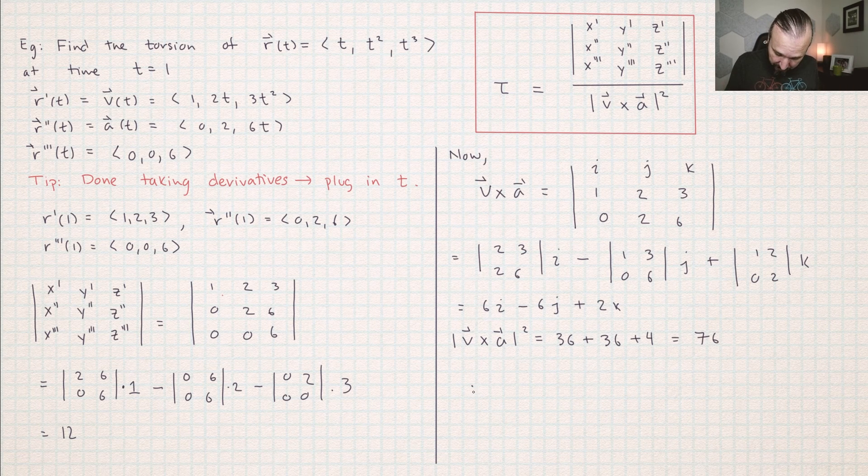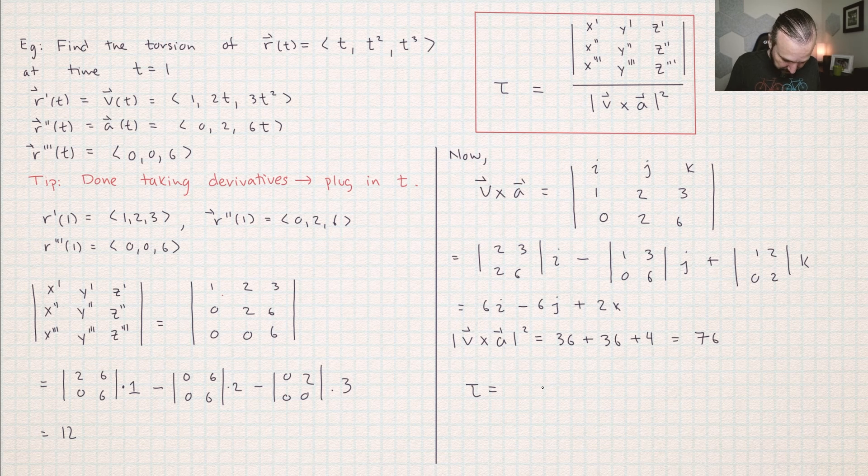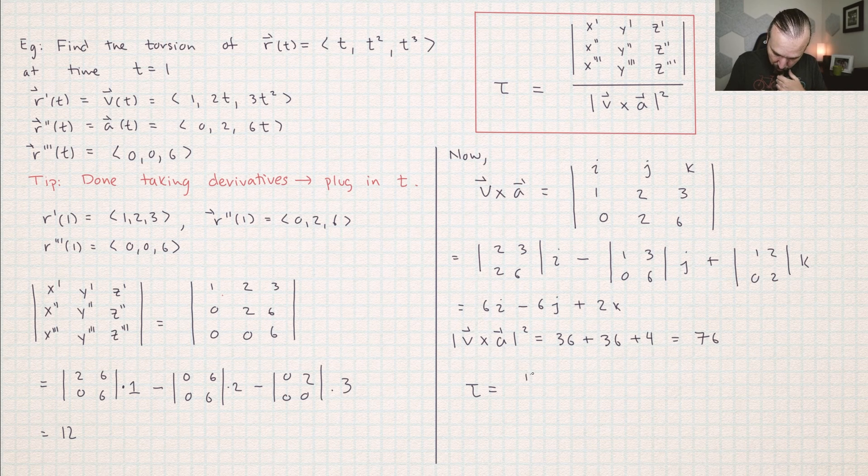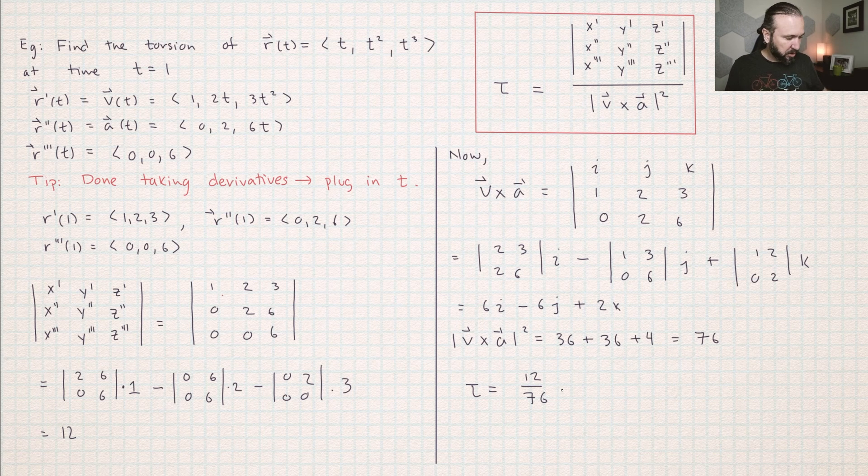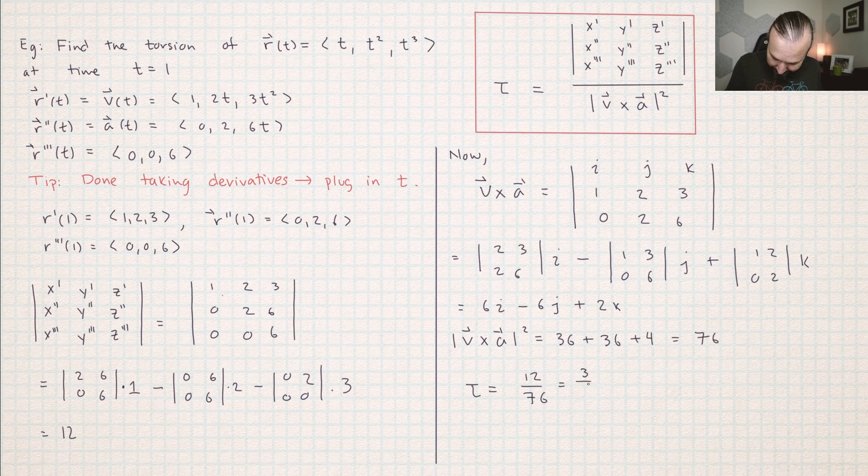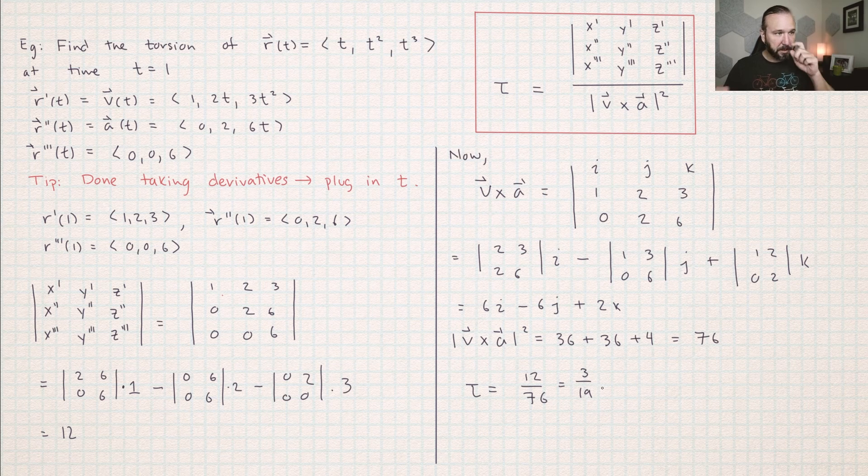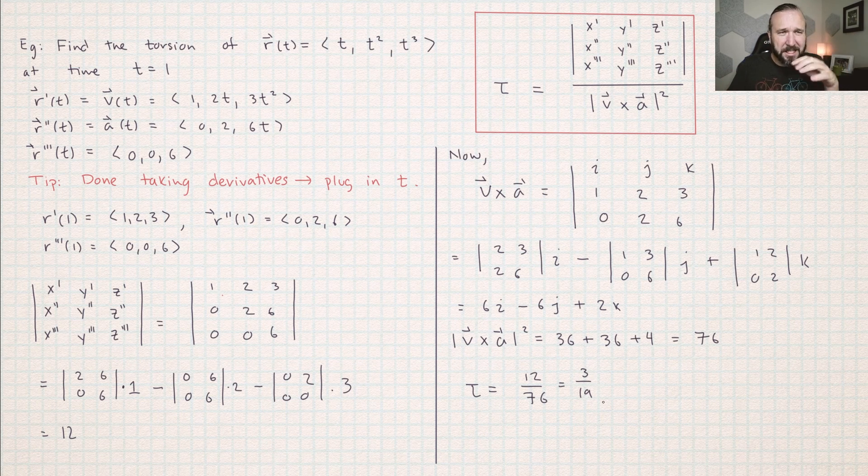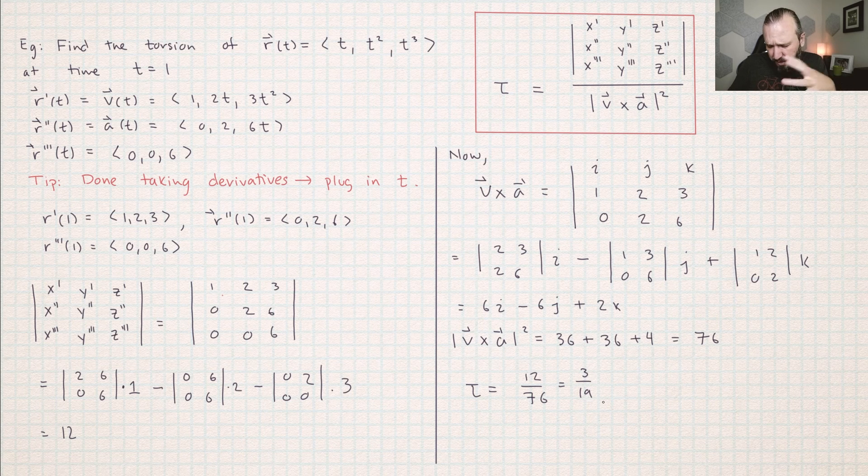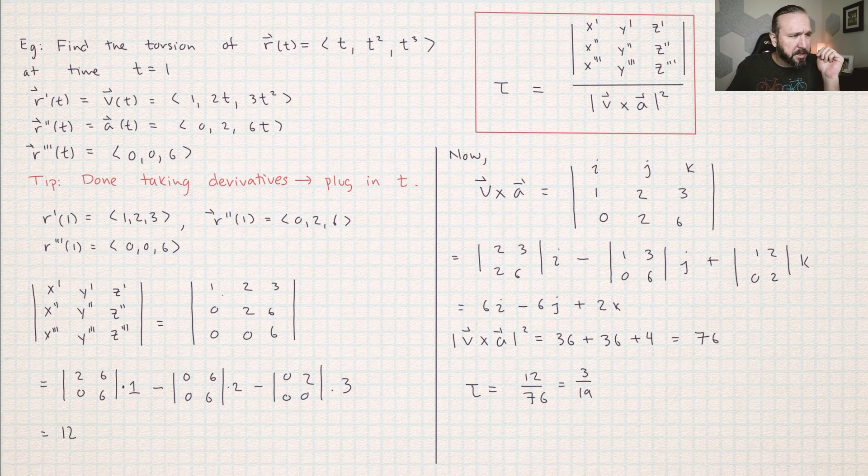So we've done it. So in the end, tau is equal to 12 over 76. And this reduces to 3 over 19. So that's it. We've calculated the torsion of this curve. It's 3 over 19. You just push the symbols around. You follow the little process.